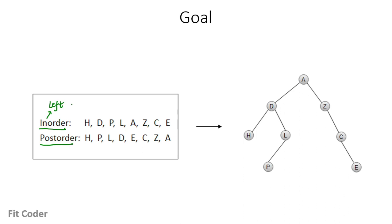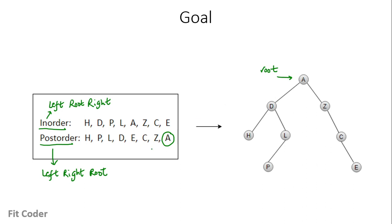Inorder is left, root, and right, and postorder is left, right, and root. We also know that the last node of the postorder traversal is the root node of the tree, so here A is the root node. I've already explained one recursive method of creating this tree, where we start from the last node of the postorder traversal and traverse in the reverse direction, finding each postorder node in the inorder traversal.